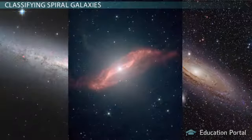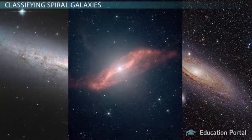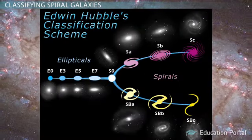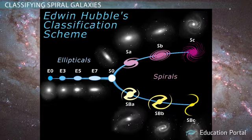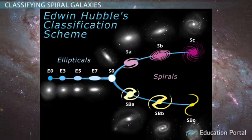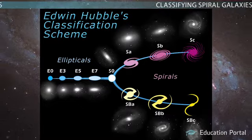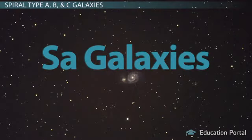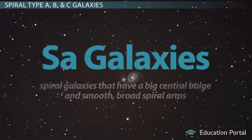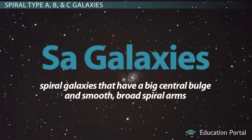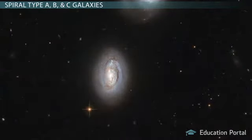This is why astronomers classify spiral galaxies into different types — to help visualize what they look like through an easy name. This lesson will tell you how they're classified so you'll know what they look like if someone mentions their name. Sa galaxies, where Sa is short for spiral type A, are spiral galaxies that have a big central bulge and smooth, broad spiral arms. Note how the bulge is very prominent and how the spiral arms are very tightly wound.